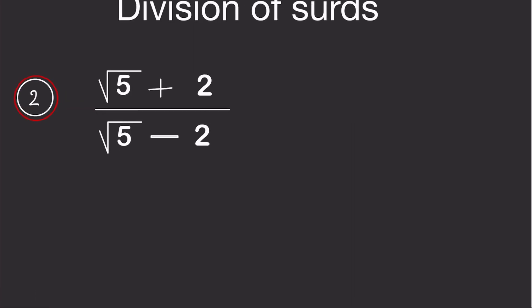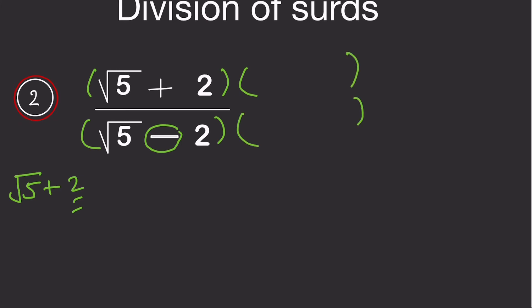Moving to the next question, we focus on the denominator. The denominator has a minus sign, so the conjugate will have a plus sign. The conjugate of root 5 minus 2 is root 5 plus 2. We multiply both the numerator and the denominator by root 5 plus 2.